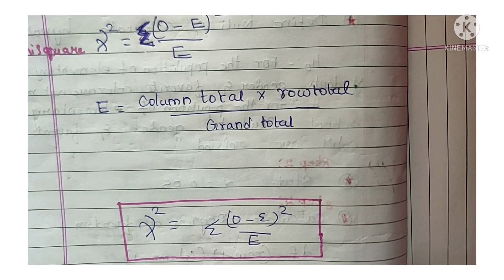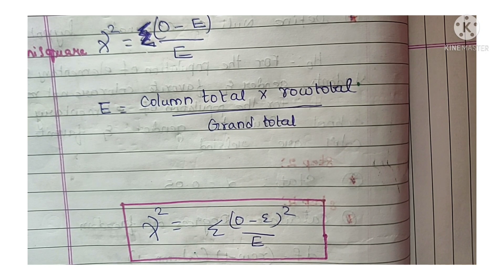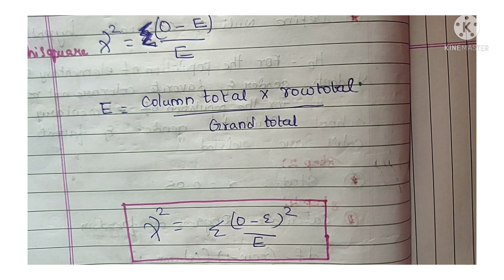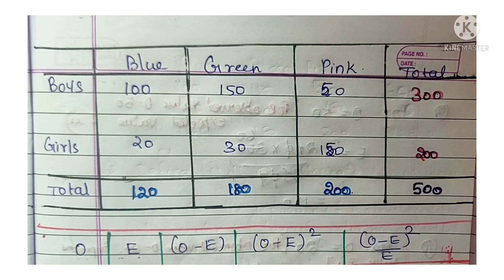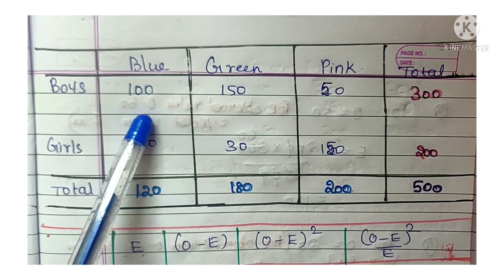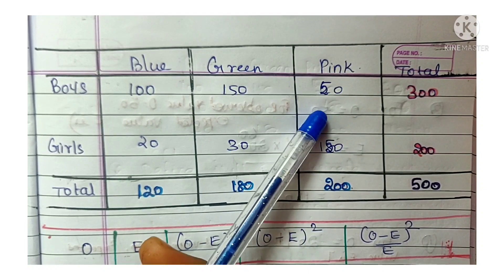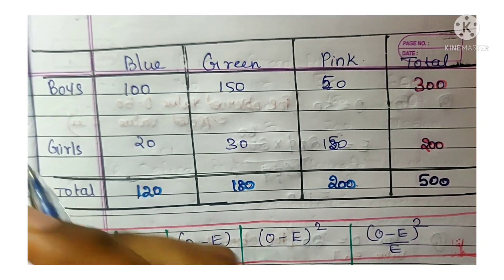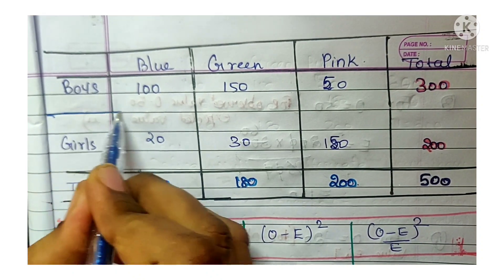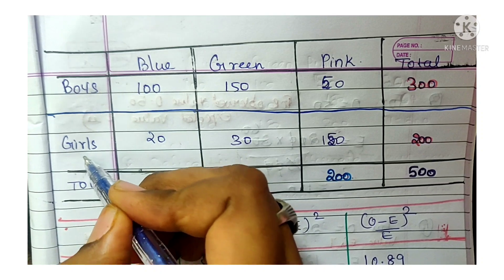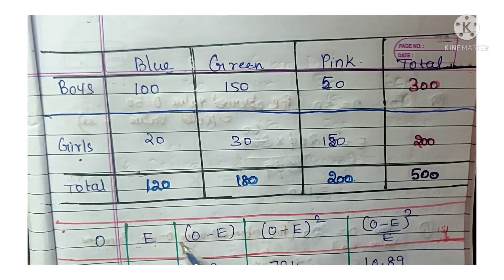Now we calculate using the given data. The table has 2 rows (boys and girls) and 3 columns (blue, green, pink). The O values — the observed values already given — are: 100, 150, 50 for boys and 20, 30, 150 for girls.